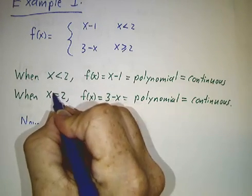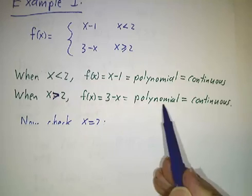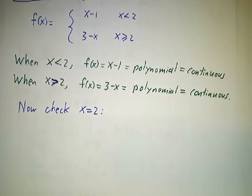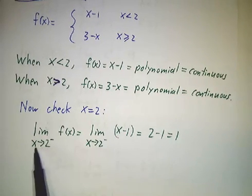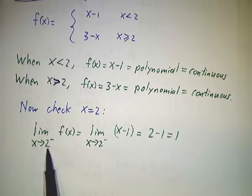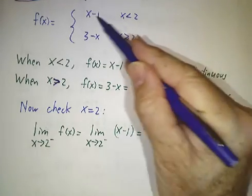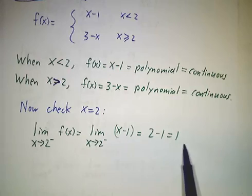When x is bigger than 2, it's 3 minus x, that's a polynomial, it's continuous. What's left is to figure out what's happening at x equals 2. So to get the limit from the left, the limit from the left is figuring out what's happening for numbers that are slightly less than 2. And for numbers slightly less than 2, this is the formula that applies. We apply x minus 1, the limit of x minus 1 is 2 minus 1, that's 1.